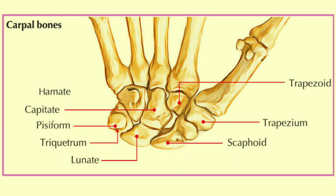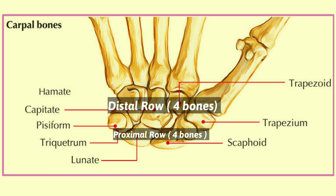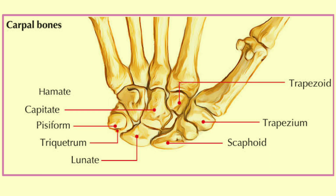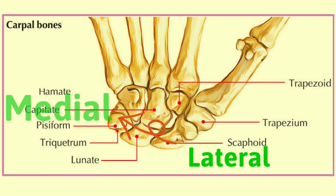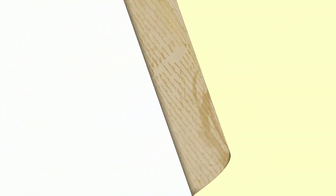The carpal bones are a group of eight irregularly shaped bones, organized into two rows: proximal and distal. Our approach towards studying them is from lateral to medial.